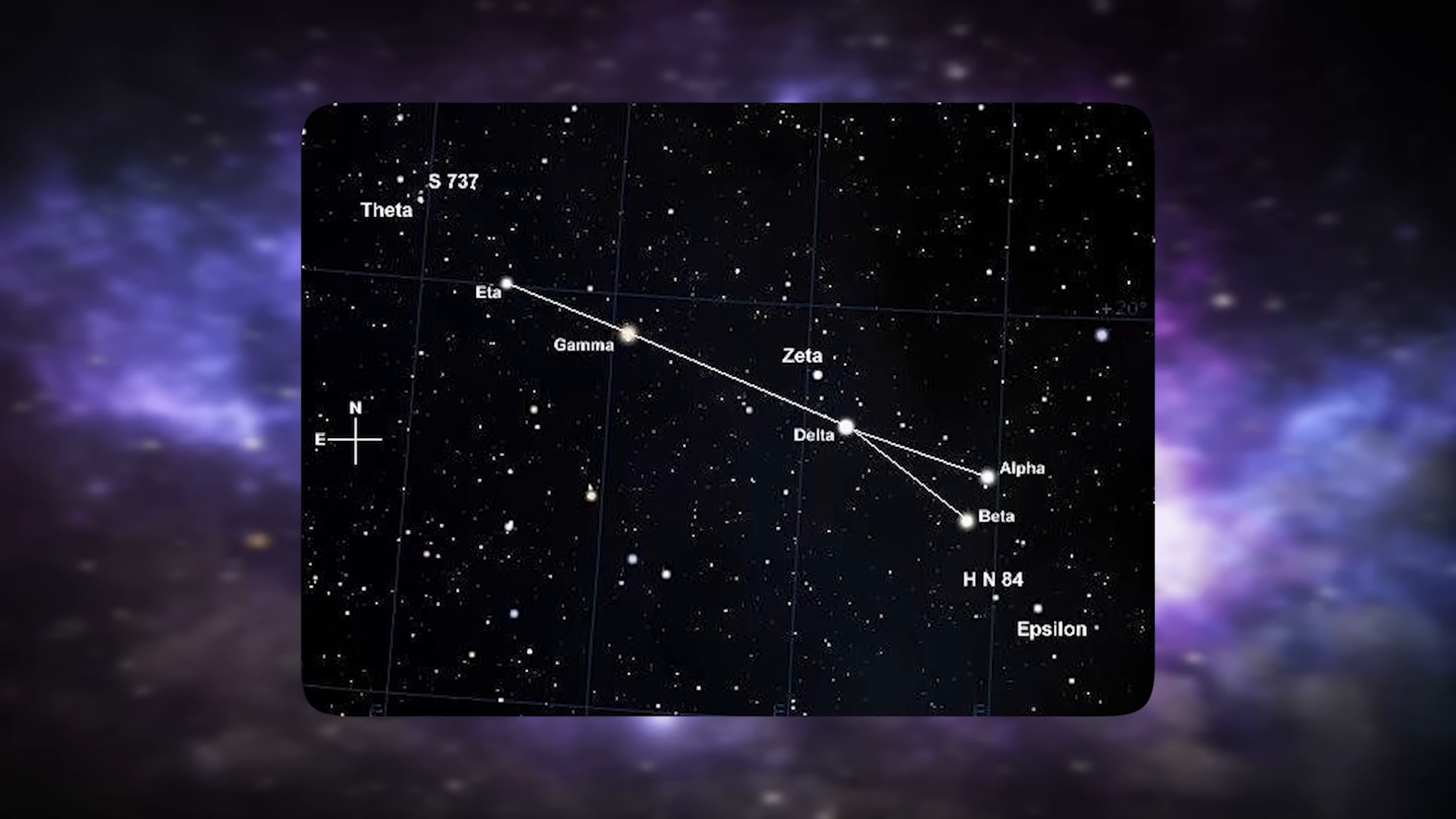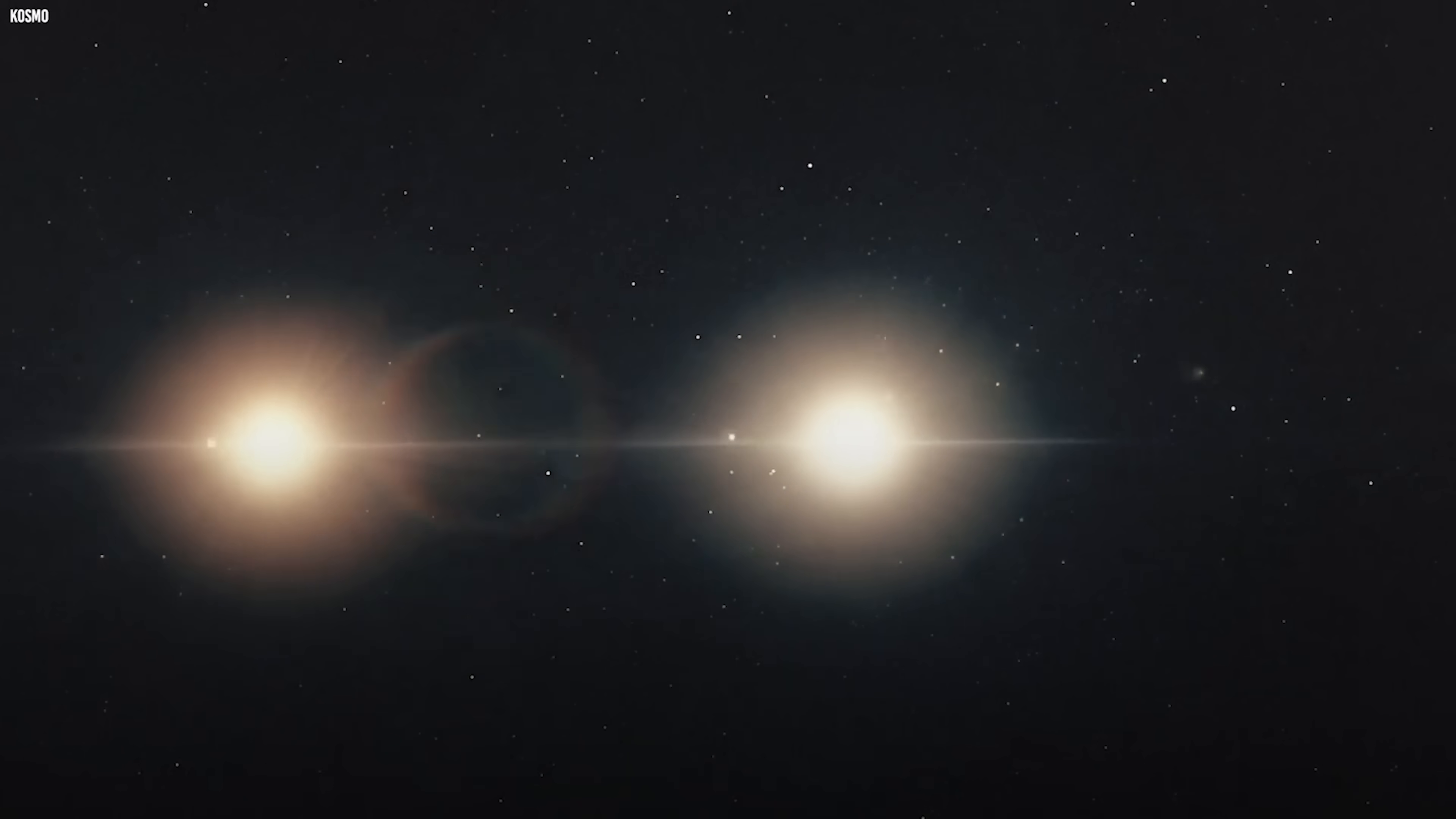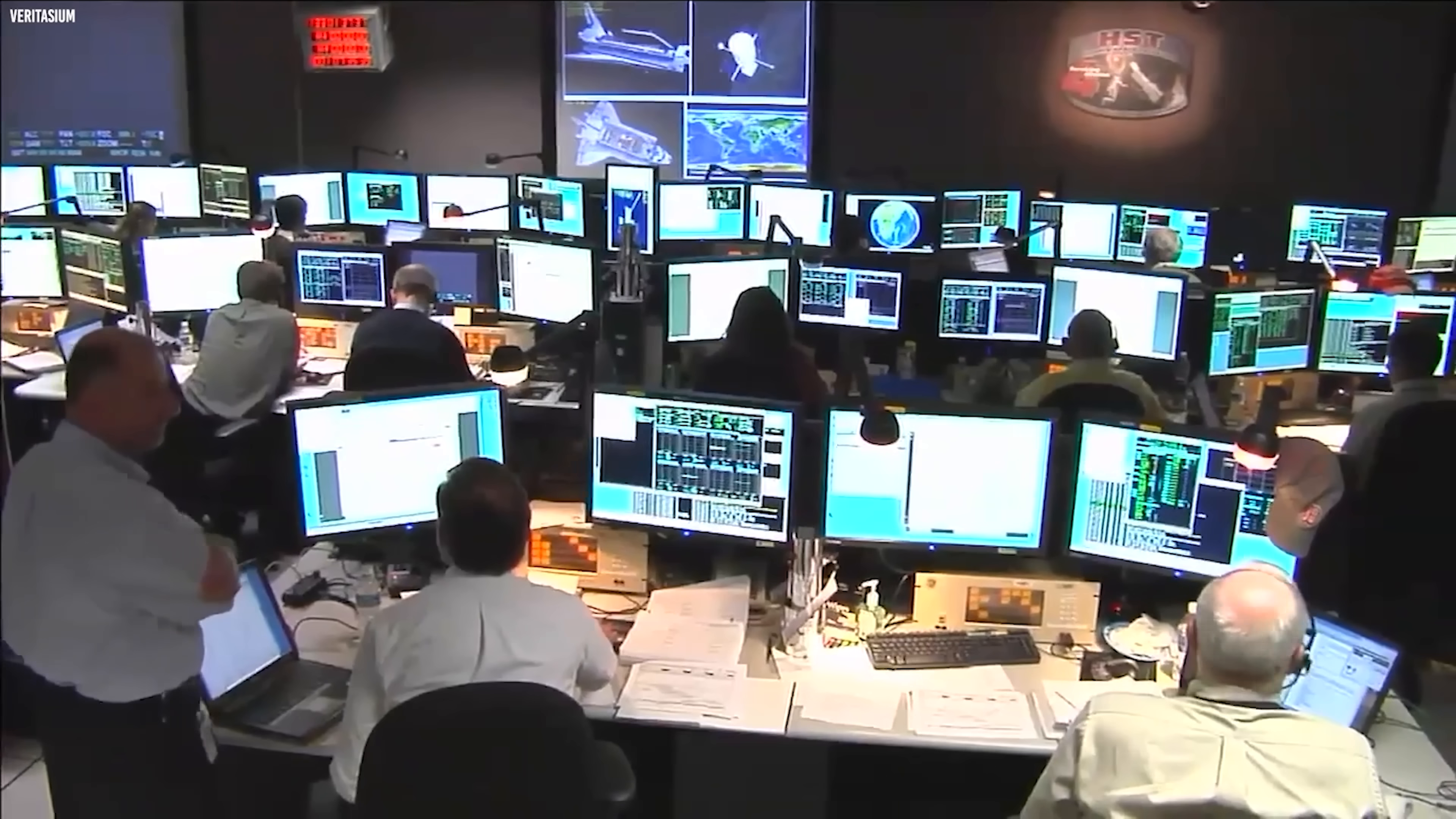One of the most compelling clues lies in its orbit. Decades of measurements reveal that the stars are drawing closer together, their orbital periods steadily shrinking in a way that can be tracked and predicted. This slow tightening is more than a curiosity—it's a countdown. If nothing interrupts the process, the pair will eventually reach a point where separation is no longer possible. By watching this unfold,